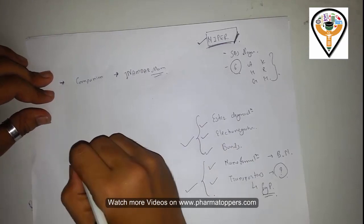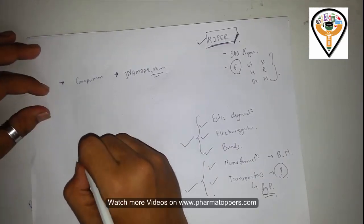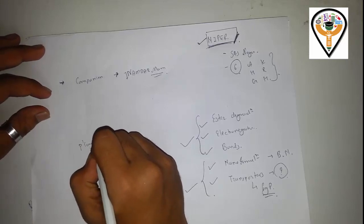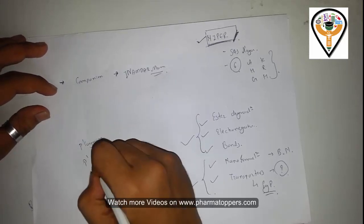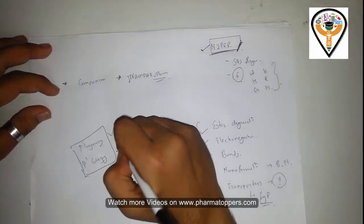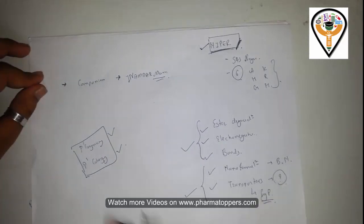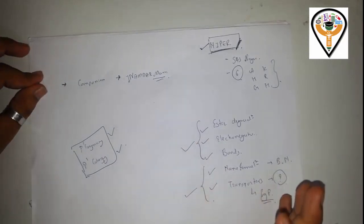In case of pharmacognosy, they simply ask very easy questions. Pharmacognosy and pharmacology are the two parts which are very easy in NIPA because they ask very simple and basic questions regarding these two subjects.